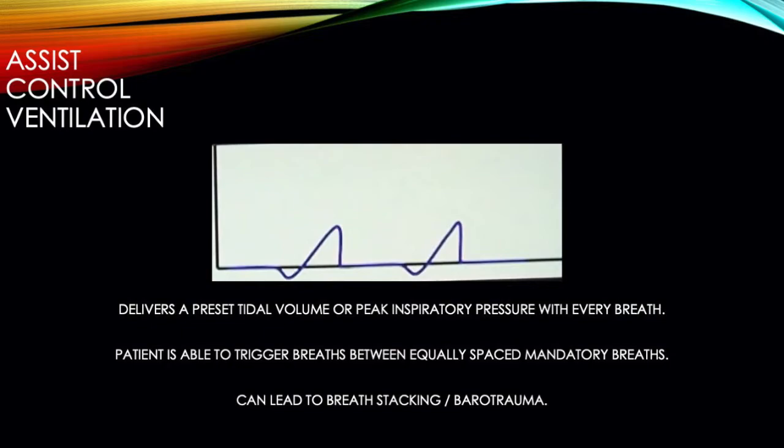The problem here is that the vent may be set for 12 breaths a minute, and the patient is breathing an additional four, six, or even eight times above what is set, and they're getting a full breath with each respiration. This can in turn lower blood carbon dioxide levels and create a respiratory alkalosis.